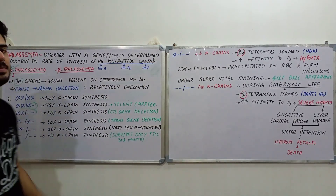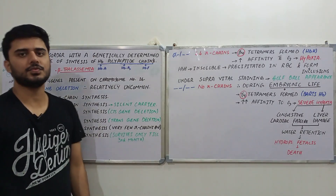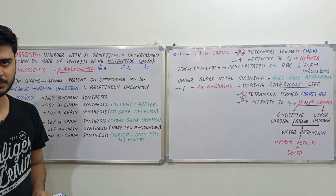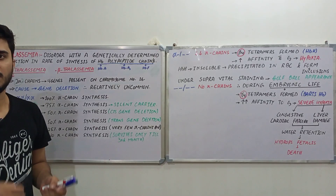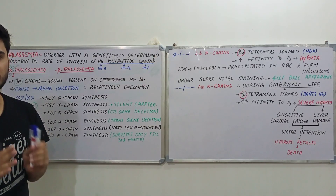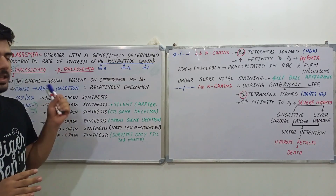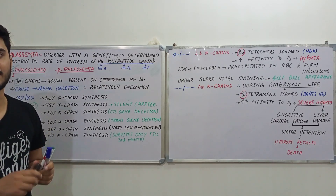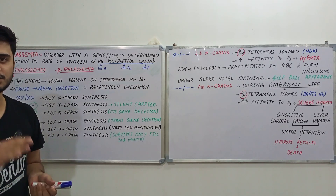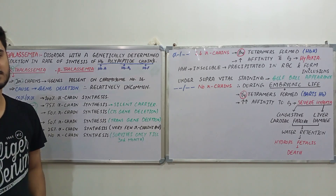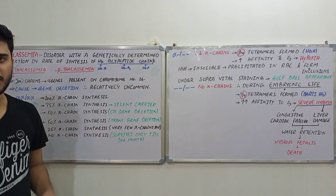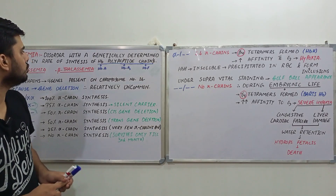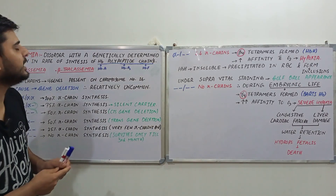I'm talking about thalassemia. Thalassemia is a disorder in which we have the reduced rate of synthesis of hemoglobin chains. You should know that there is no structural abnormality within thalassemia — the only problem is that we have the reduced rate of synthesis of hemoglobin molecule chains.